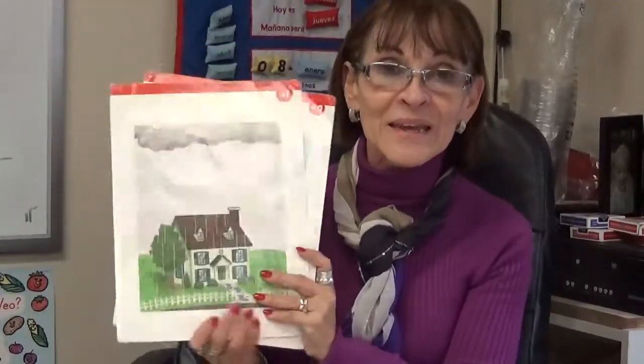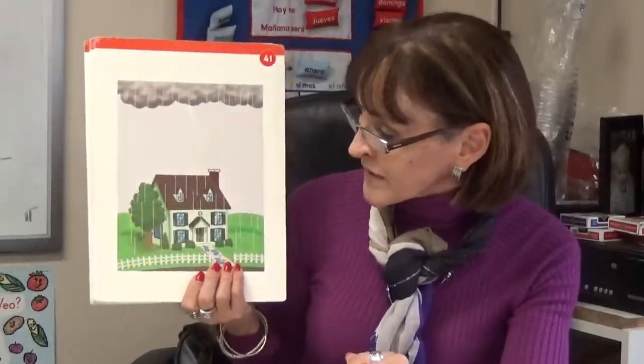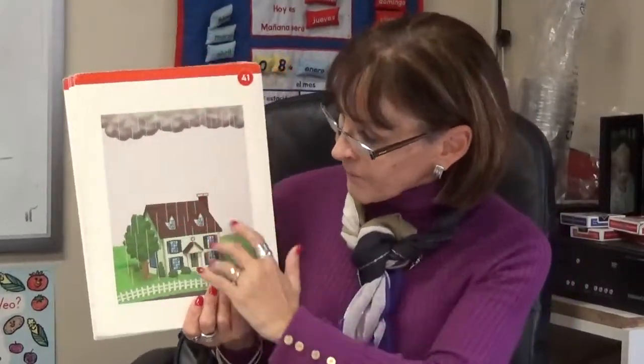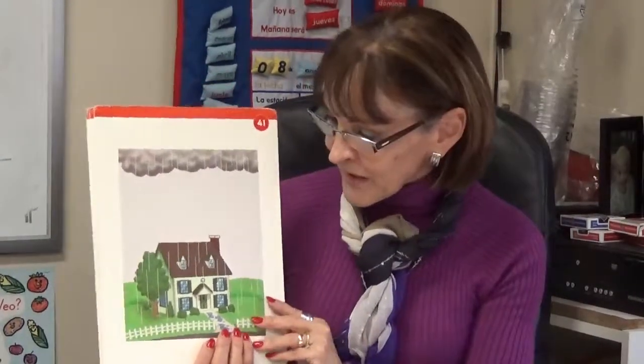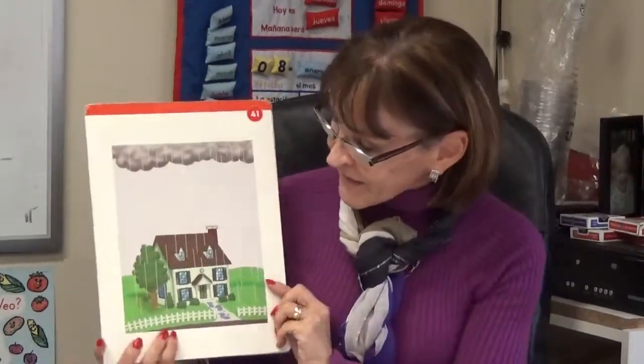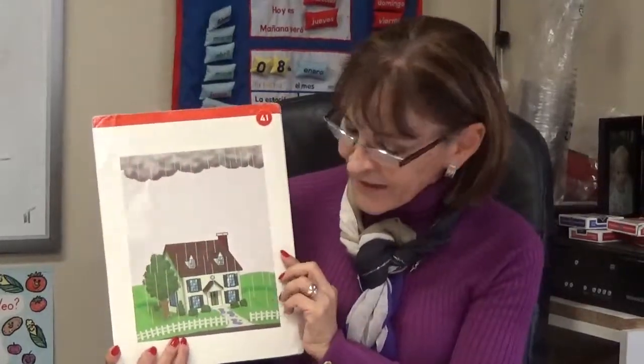¿Qué tiempo hace en la primavera? — What's the weather like in springtime? Llueve — It rains. Hace buen tiempo — It's nice out. Hace sol — It's sunny. Está nublado — It's cloudy.